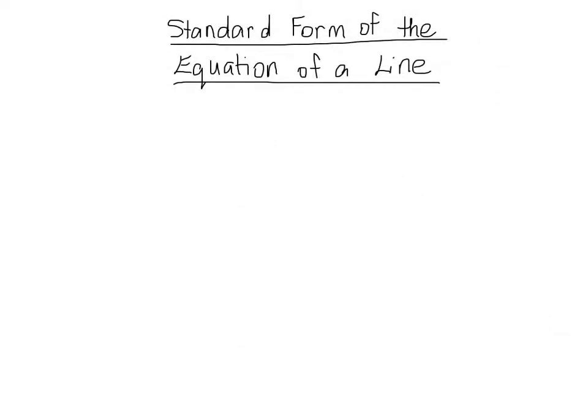In this video, we'll be looking at how to write the equation of a line in standard form. I'm assuming at this point that you've already learned how to write the equation of a line in slope-intercept form and that you're comfortable with that. We'll be looking at how to change from slope-intercept form to standard form and vice versa. So let's begin by talking about first what exactly is the standard form of the equation of a line.